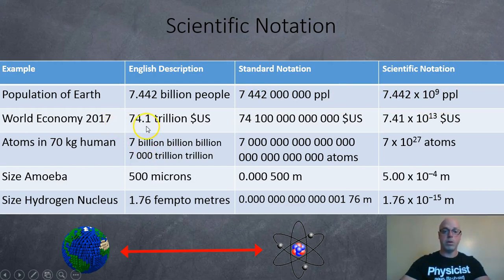The world economy, there's approximately 74.1 trillion dollars U.S. in the world today. And so if you write that in standard notation, there's 74 trillion, 100 billion U.S. dollars. And we bring the decimal from where the dollar sign would be over 3, 6, 9, 12, 13 jumps to the left. 7.41 times 10 to the 13 U.S. dollars.